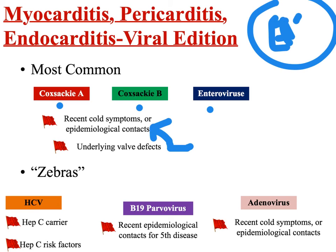There are some zebras here. Most of the time you're dealing with Coxsackie A, B, or enteroviruses, but there are some others that come up as fairly common alternatives. Those three alternative viruses are hepatitis C, parvovirus B19, and various adenoviruses.